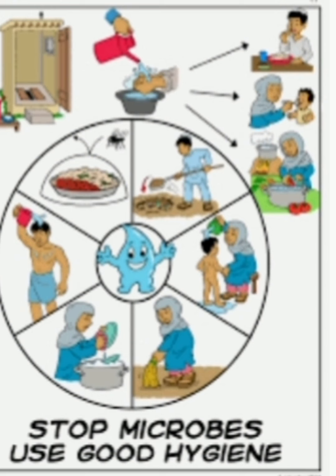We already know what communicable diseases are and what their symptoms are. Now we have to learn how we can prevent these communicable diseases. The first method is by maintaining good hygiene. If we maintain good hygiene, we can at some level stop or prevent these communicable diseases.